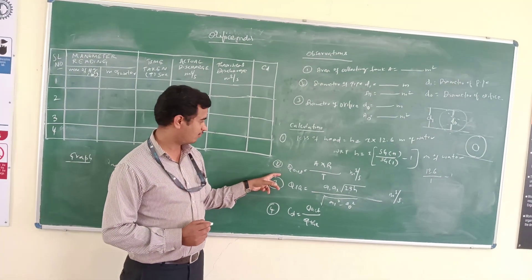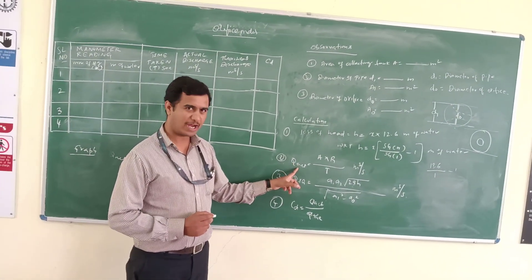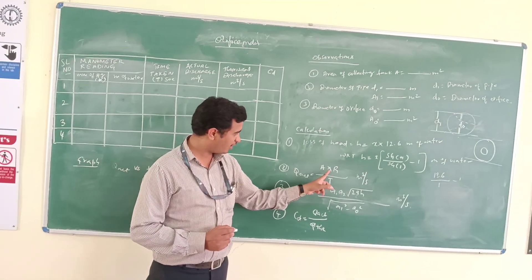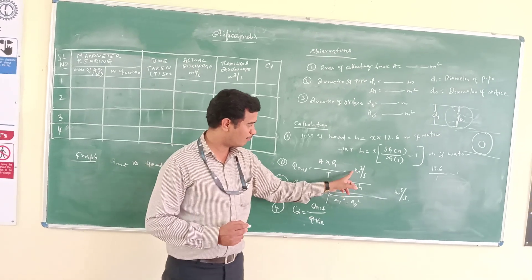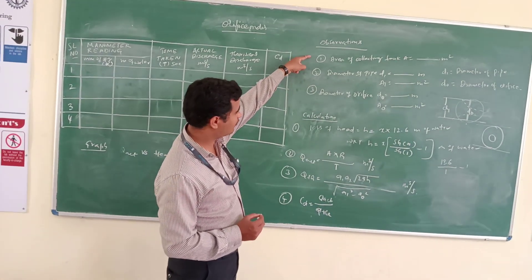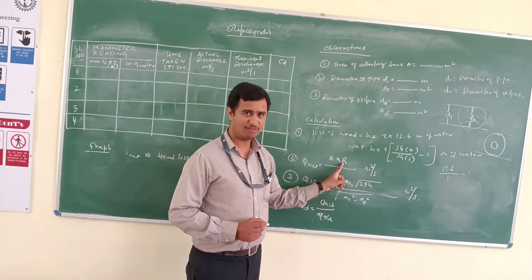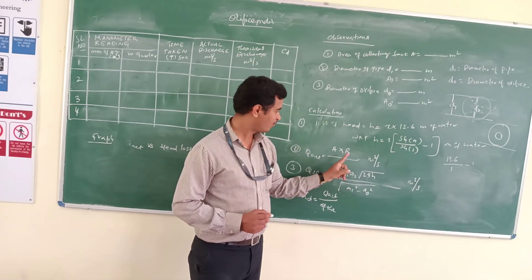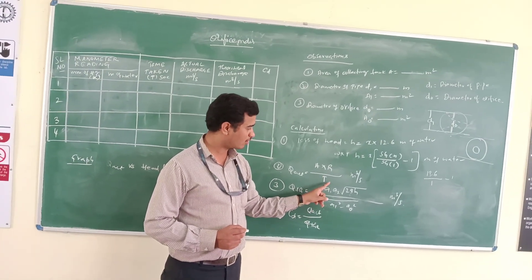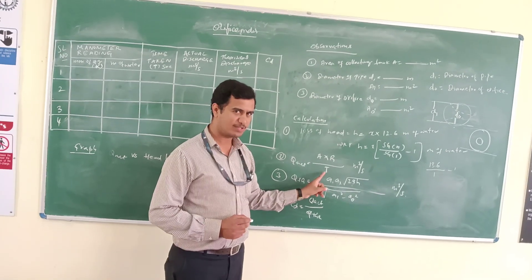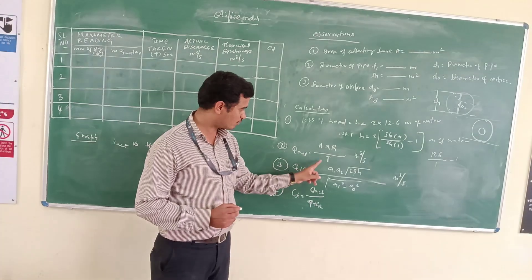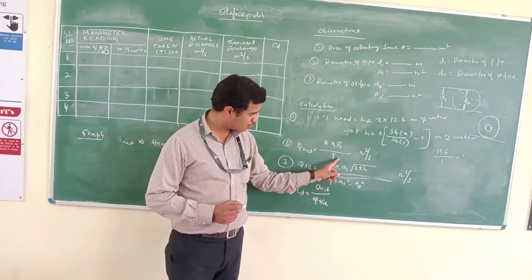Moving on to the next variable, which is the actual discharge. Q actual is equal to A into h divided by t, where the unit will be cubic meters per second. Here, A is the area of the collecting tank taken from the observation, and h is the 10 centimeter rising water level. Time taken is very important — if you miss the time taken or have any plus or minus error, you will get the wrong value of the coefficient of discharge. So we have to concentrate more on the time taken.